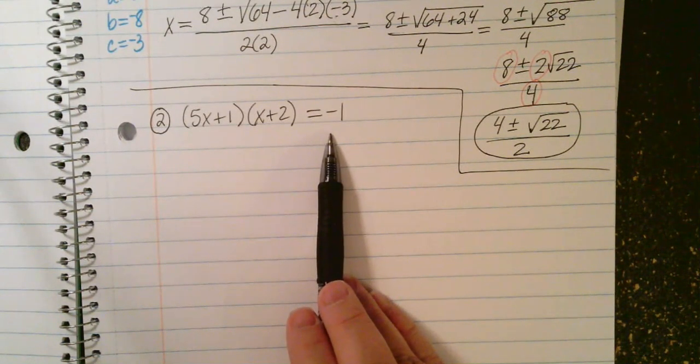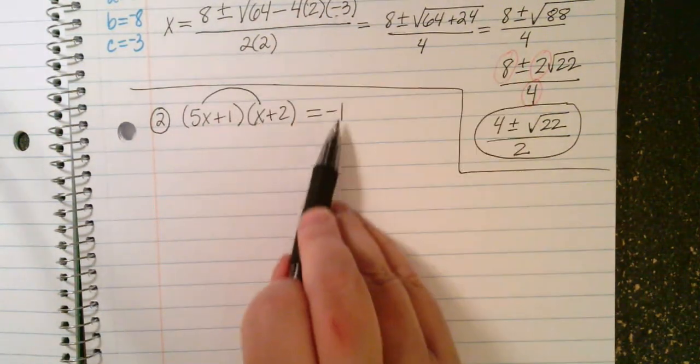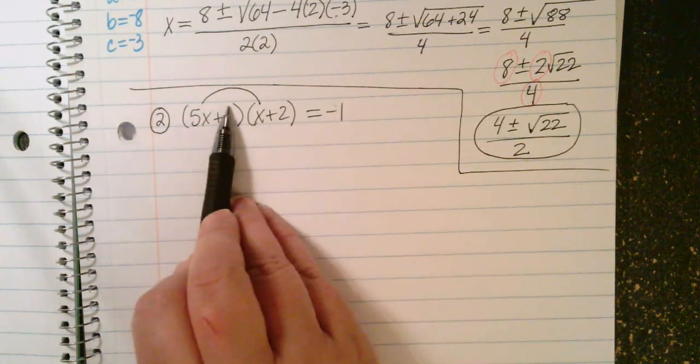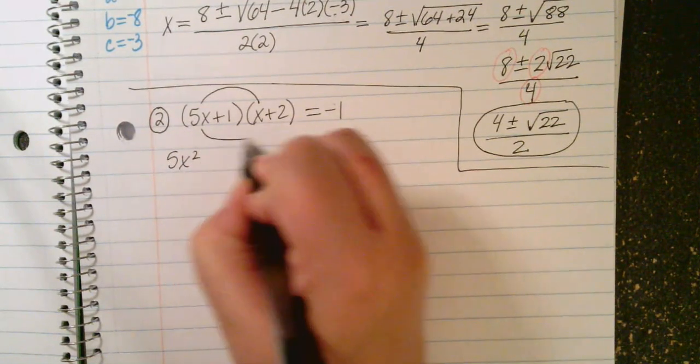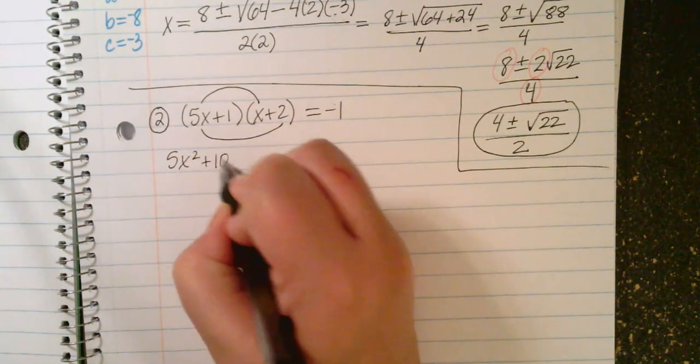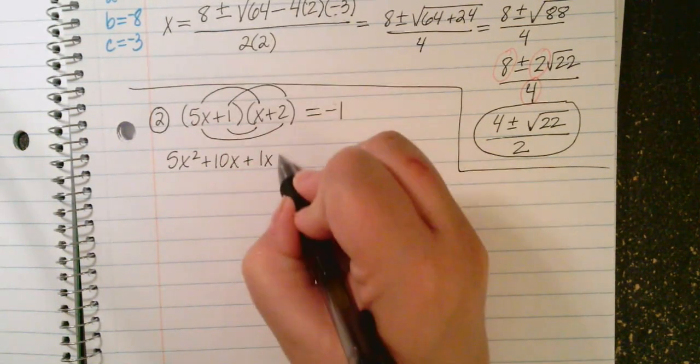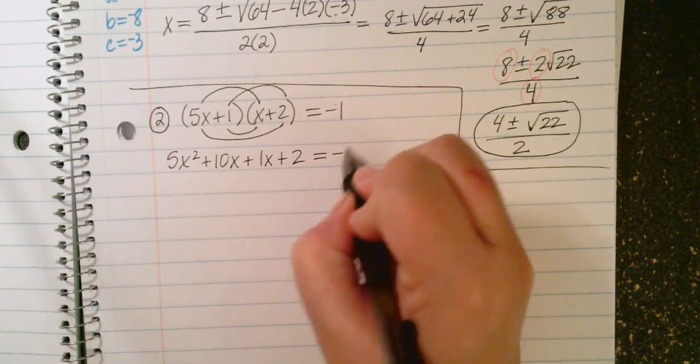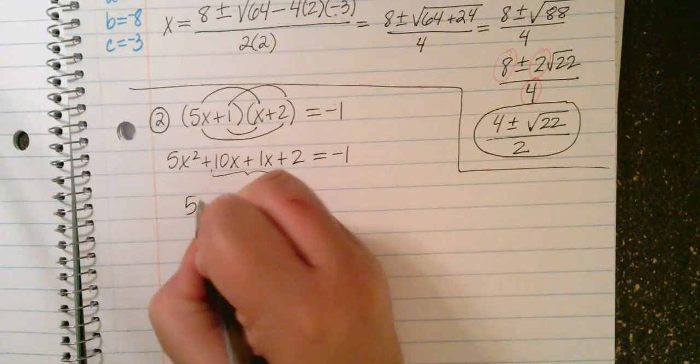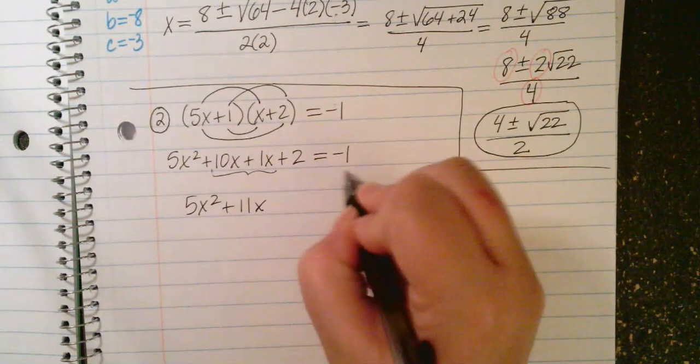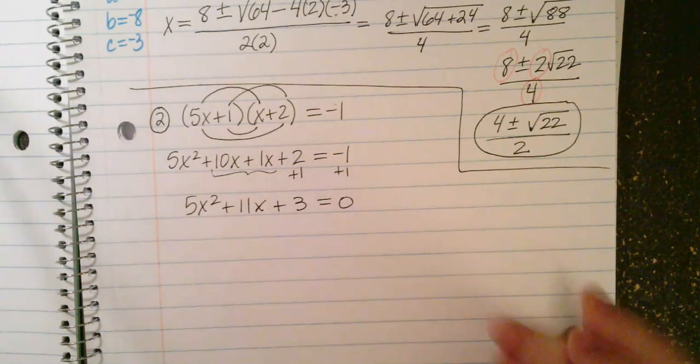Instead, I'm actually going to have to multiply this back out. So I'm going to multiply 5x because I want to get this 0. So I'm going to have to incorporate this over here. So 5x times x is 5x squared. 5x times 2 is 10x. 1 times x is 1x. And 1 times 2 is 2. I can combine these like terms. 5x squared plus 11x. And I can add the 1 to both sides. Plus 3. Now I have the 0 on the right-hand side. So now I am ready to solve this.